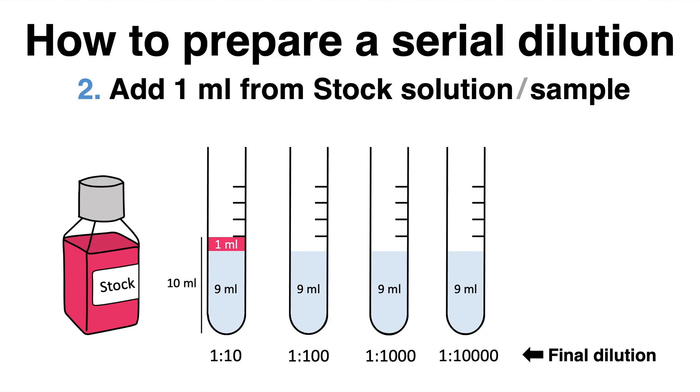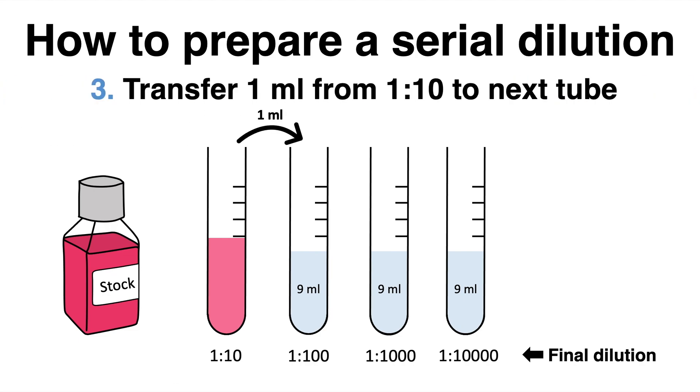After properly mixing the 1 to 10 dilution, 1 ml can be taken from this tube to the next one. That milliliter contains 1 to 10 of the stock solution. With the additional 9 ml of water, this makes a final concentration of 1 to 100 when equally distributed.